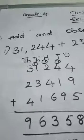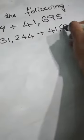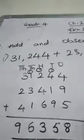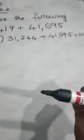31,244. This is the second bit, second problem. So what we have to do? Again, we have to add this all. 31,244 plus 23,419. Can you see this? This number and this number are same. So if we do addition, we will get the same result.